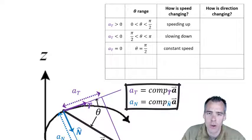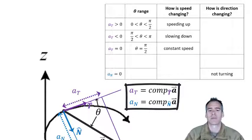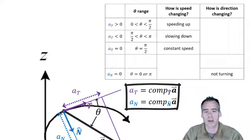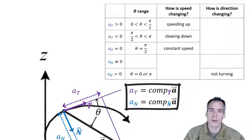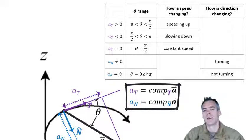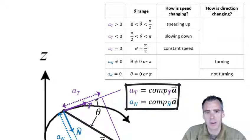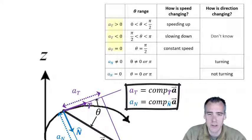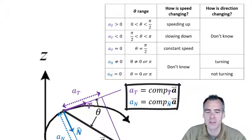Moving on to the normal component: if a_N equals zero, the object is not turning — as in the rocket's initial straight-up launch. If a_N is not equal to zero, the object is definitely turning, because any a_N causes the object to turn in some direction. To complete the picture: the tangential acceleration tells you nothing about an object's change in direction, while the normal acceleration component tells you nothing about an object's change in speed.